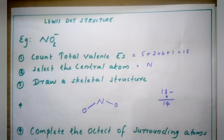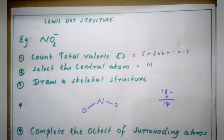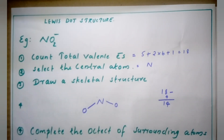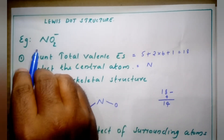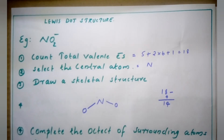The second step is to select the central atom. We know that three atoms are there: one nitrogen and two oxygens. The central atom is always the least electronegative element and the one least in number. Comparing nitrogen and oxygen, nitrogen is least electronegative, and also nitrogen is less in number, so nitrogen is the central atom.